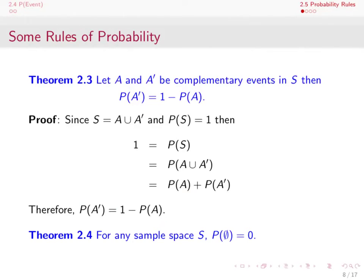Theorem 2.4 states that for any sample space S, the probability of the empty set is equal to 0. This follows from the fact that the empty set is the complement of S. Since the probability of S is 1, then 1 minus the probability of S gives the probability of the empty set, which is 0.